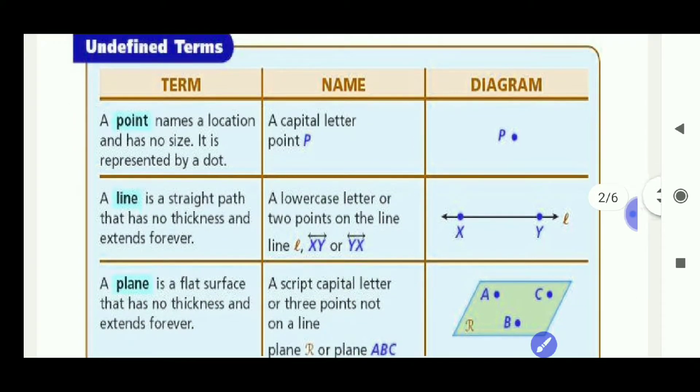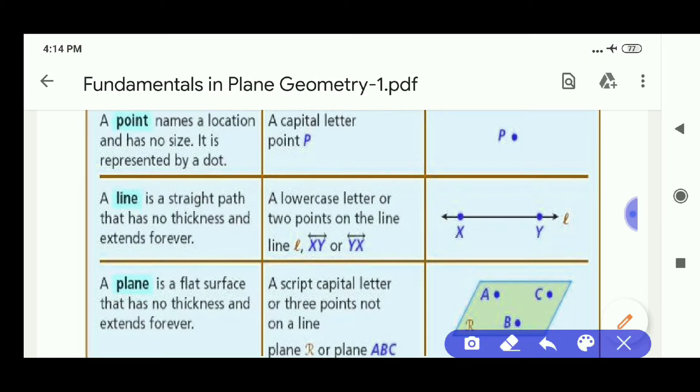Line. Line is also undefined term. A line is a straight path that has no thickness and it can be extended both sides forever. It is also denoted with small letters like L or A or P like this. And if there are two points on the line,